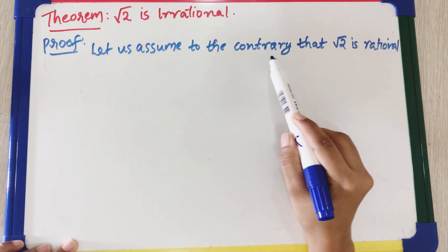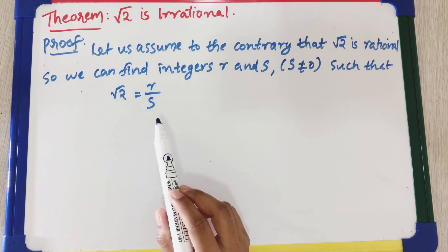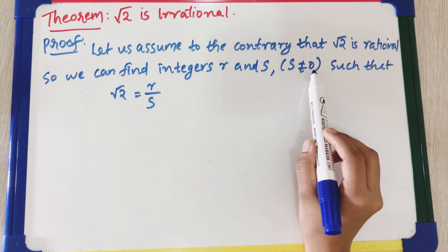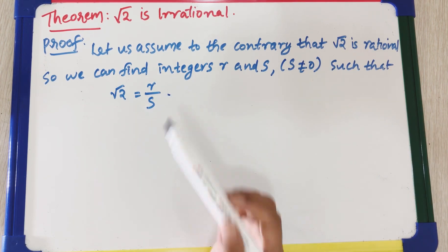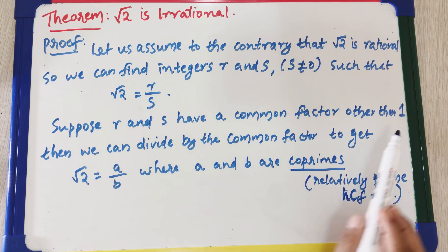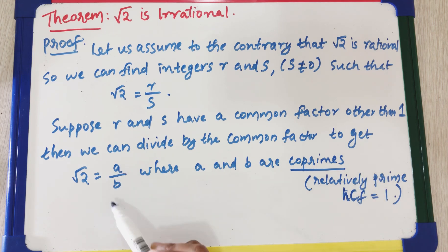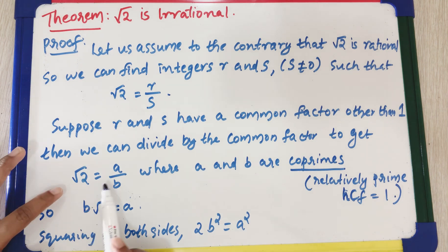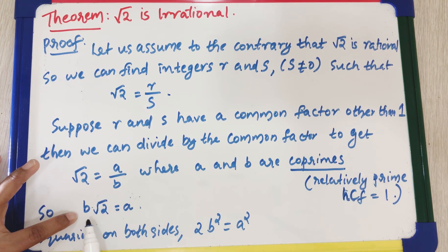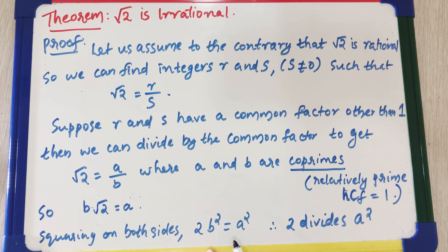Formal proof: Let us assume to the contrary that √2 is rational. If √2 is rational, we can find integers r and s with s ≠ 0 such that √2 = r/s. Suppose r and s have a common factor other than 1; then we divide by it to get √2 = a/b where a and b are co-primes (HCF of a and b equals 1). Taking b across and squaring both sides, b²× 2 = a², so 2b² = a², meaning 2 divides a².